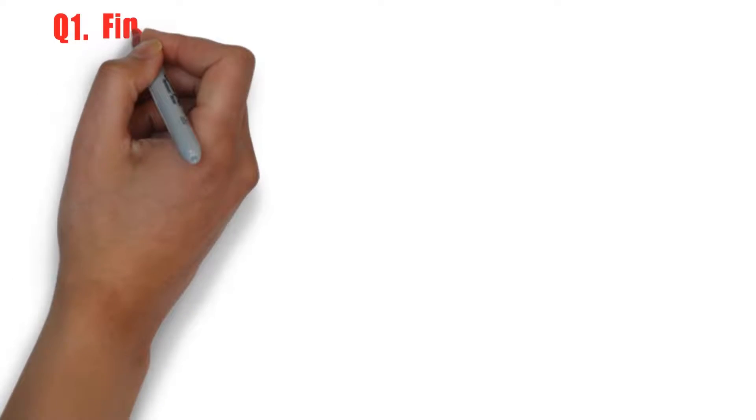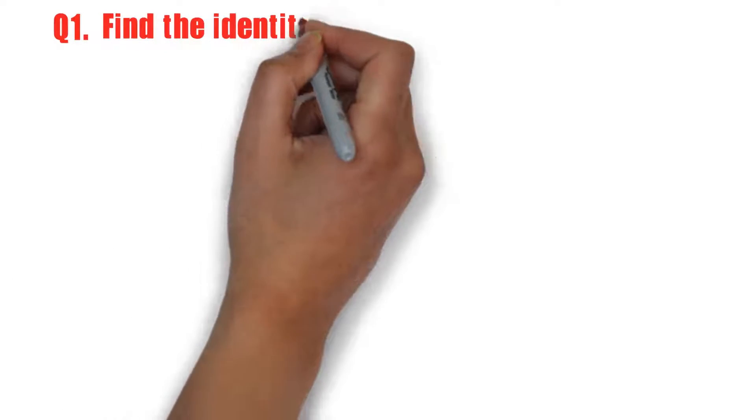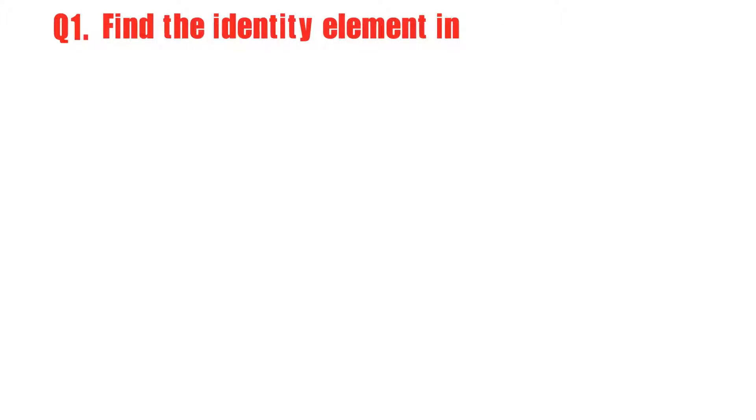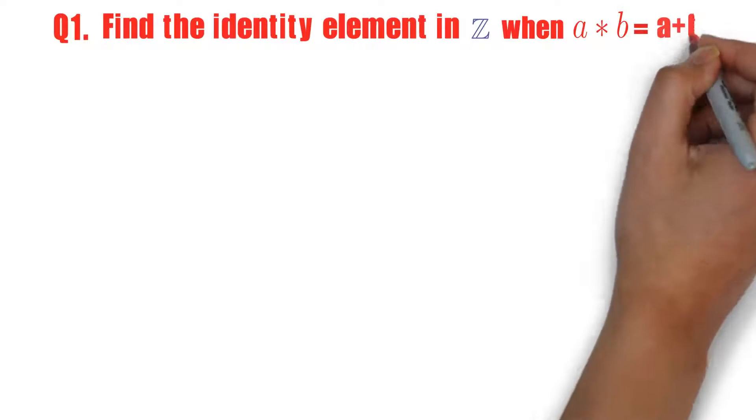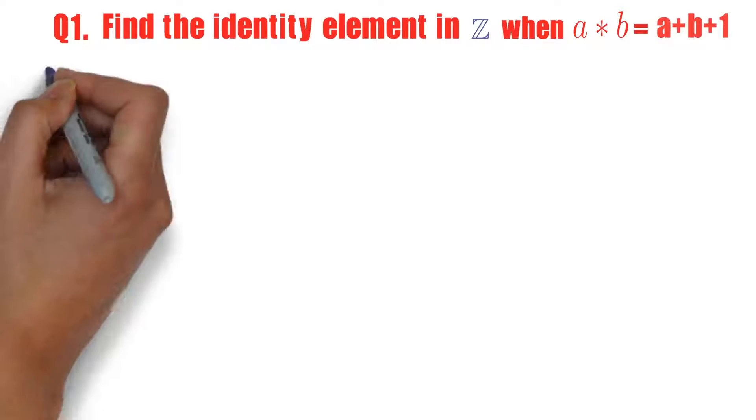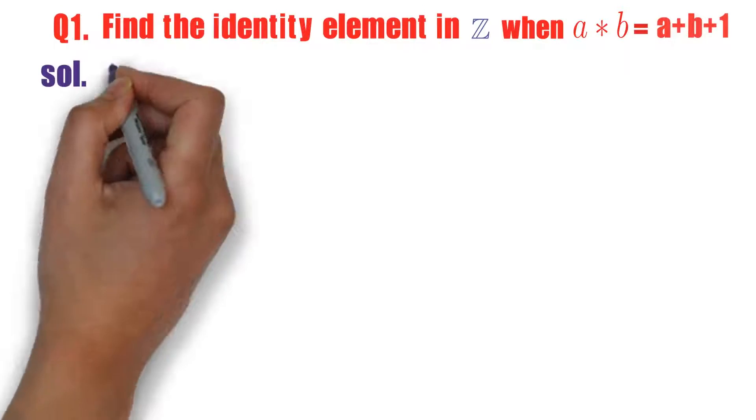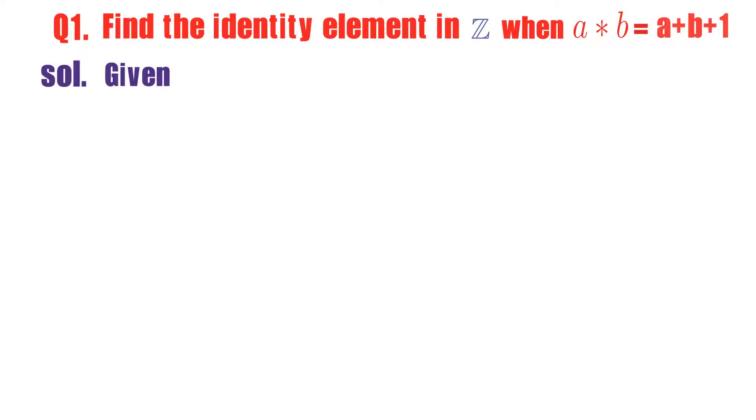Hi friends, welcome to BRMAX class. Question number one: Find the identity element in Z when a star b is defined as a plus b plus one. So we need to find the identity element. Given a star b is given as a plus b plus one.